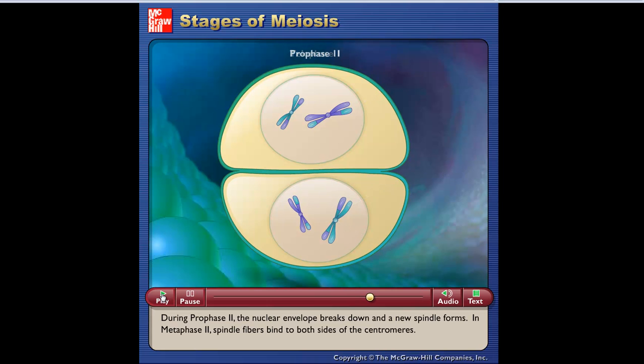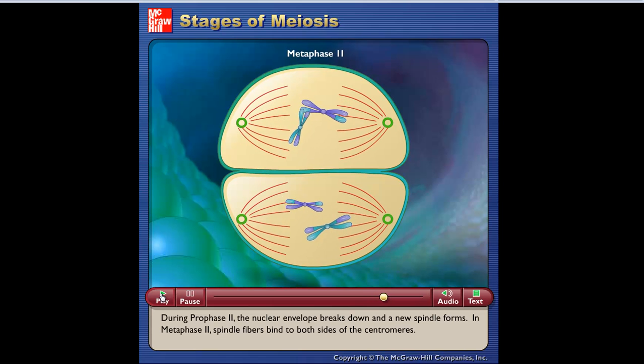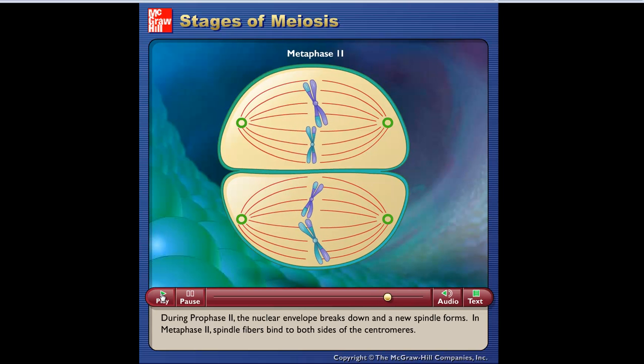During prophase II, the nuclear envelope breaks down and a new spindle forms. In metaphase II, spindle fibers bind to both sides of the centromeres.